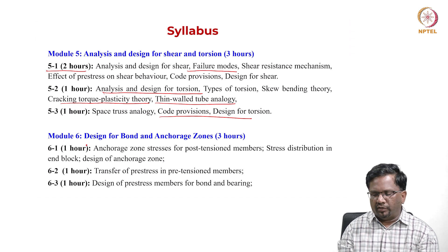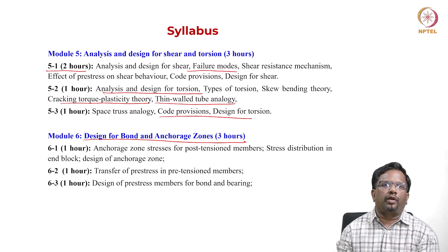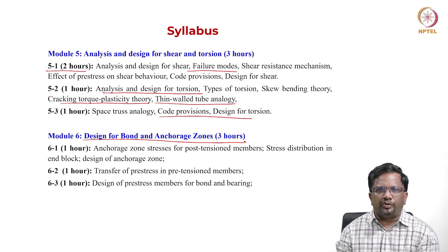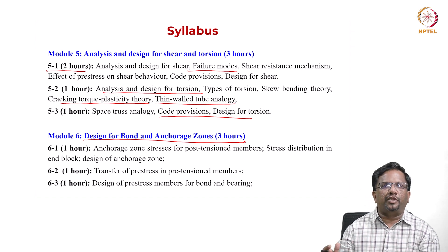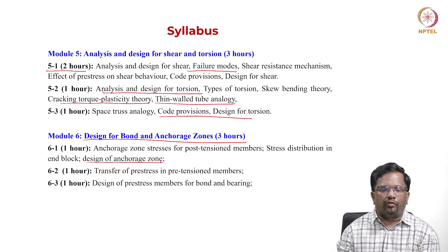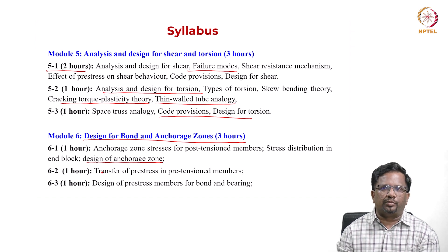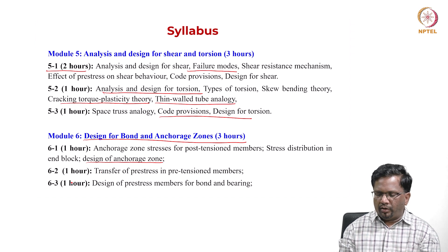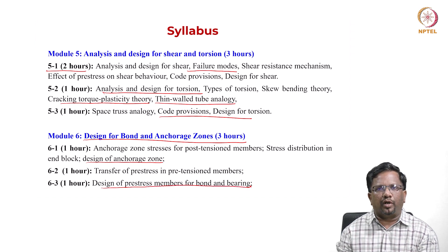Module 6 focuses on design for bond and anchorage zones. Anchorage zone design is very important in post-tension systems, where a huge amount of compression force is locked in — these must be designed carefully to avoid accidentally damaging the end zones. Part 2 covers transfer of pre-stress in pre-tension members, including transfer length and why it is important. Part 3 covers design of pre-stress for bond and bearing.